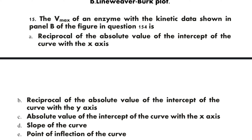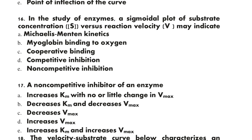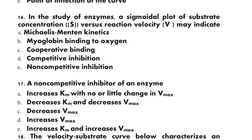Question 16: In the study of enzymes, a sigmoidal plot of substrate concentration S versus reaction velocity V may indicate: A) Michaelis-Menten kinetics, B) myoglobin binding to oxygen, C) cooperative binding, D) competitive inhibition, E) non-competitive inhibition. The correct option is C: cooperative binding.